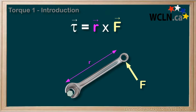So what about that distance R? If the bolt is really tight, you need to apply a big force to twist it off. But often, there's only so much force that you can apply.